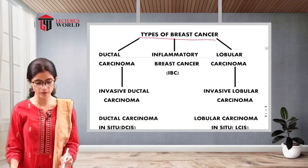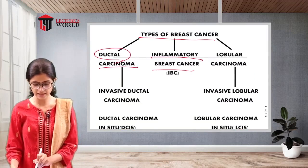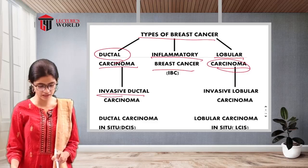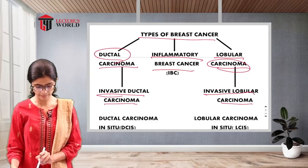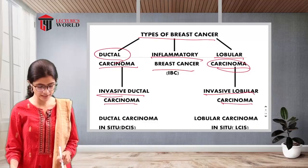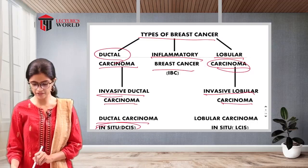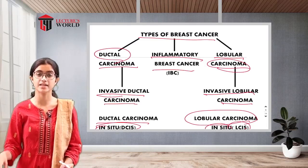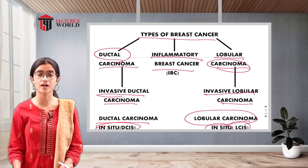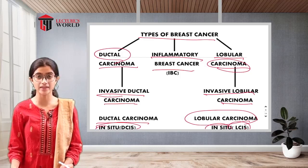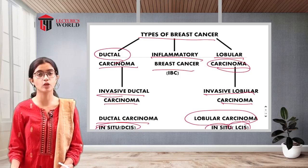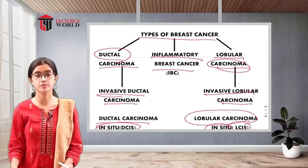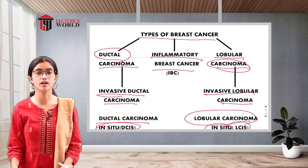The types of breast cancer include ductal carcinoma, inflammatory breast cancer, and lobular carcinoma. Ductal and lobular carcinoma are further divided into invasive and non-invasive forms. Non-invasive ductal carcinoma is called ductal carcinoma in situ (DCIS), and non-invasive lobular carcinoma is called lobular carcinoma in situ (LCIS). If the lobular carcinoma spreads to other parts, it is called invasive lobular carcinoma.